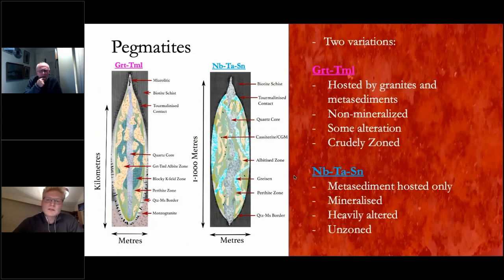The pegmatites themselves have two variations. The first is garnet tourmaline, which is non-mineralised at the time, basically the type that you wouldn't mine, which is hosted by both the granites and the metasediments in the license, characteristically non-mineralised with some alteration and very crudely zoned.